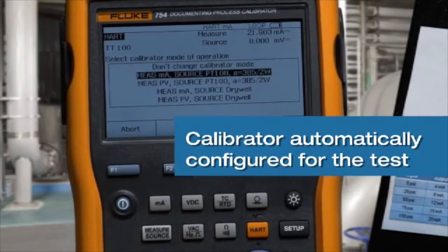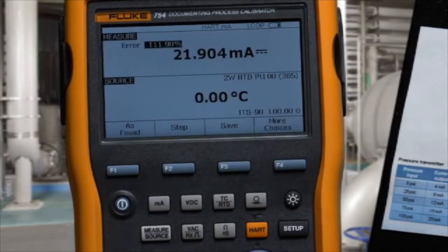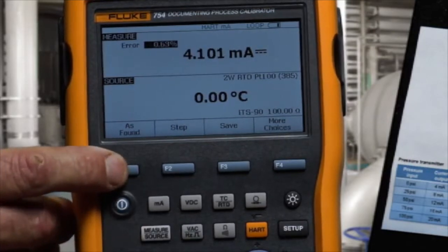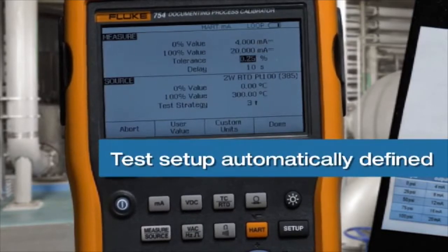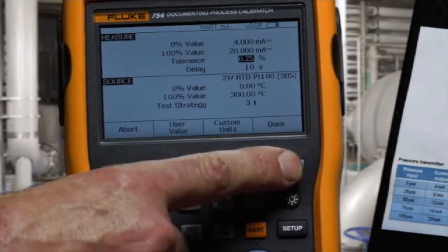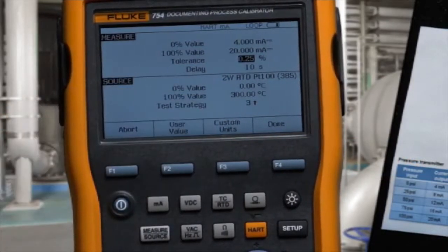We continue and configure the calibrator to measure and source the correct values. Then to initiate the test, we select as found to input the test tolerance. Test tolerance of 0.25%, sourcing 0 to 300 degrees C, PT100385.